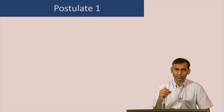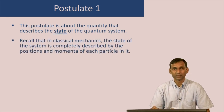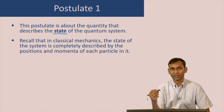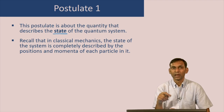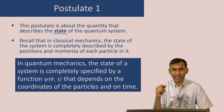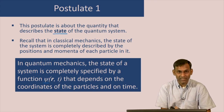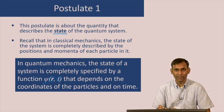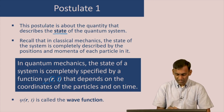Let us begin with postulate 1. This postulate is about the quantity that describes the state of the quantum system. In classical mechanics, the state is completely described by the positions and momenta of each particle. In quantum mechanics, we postulate that the state of a system is completely specified by a function denoted as psi, which is a function of the coordinates of the particle (vector r) and time. This function depends on position and time, and because it looks like the function describing a wave, it is called a wave function.